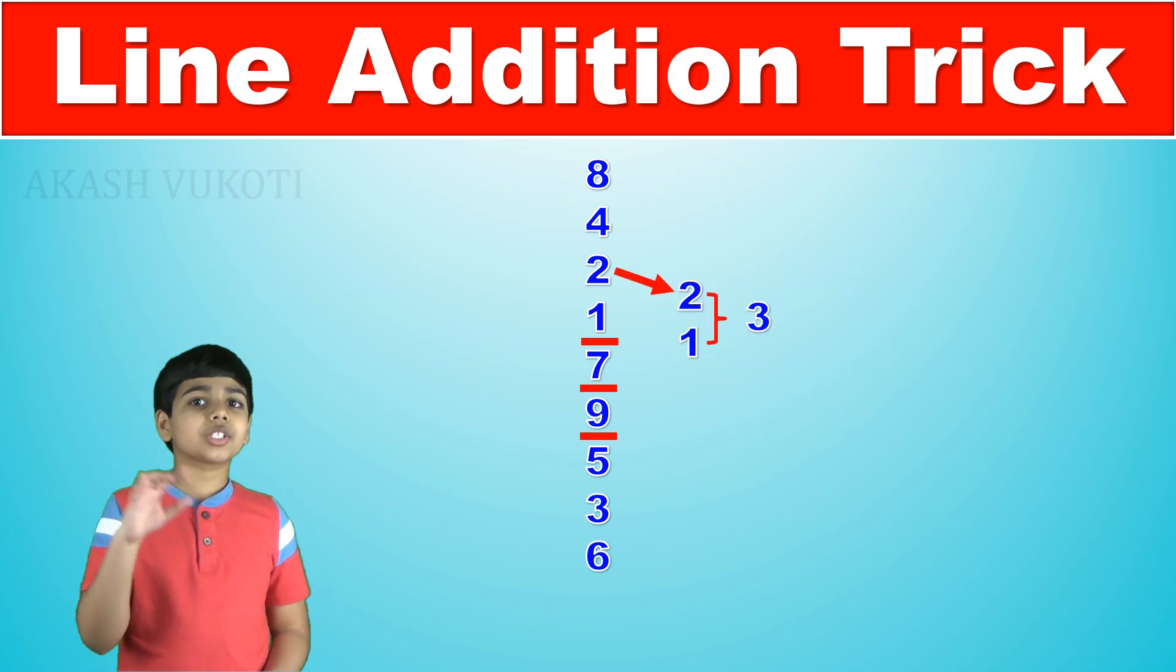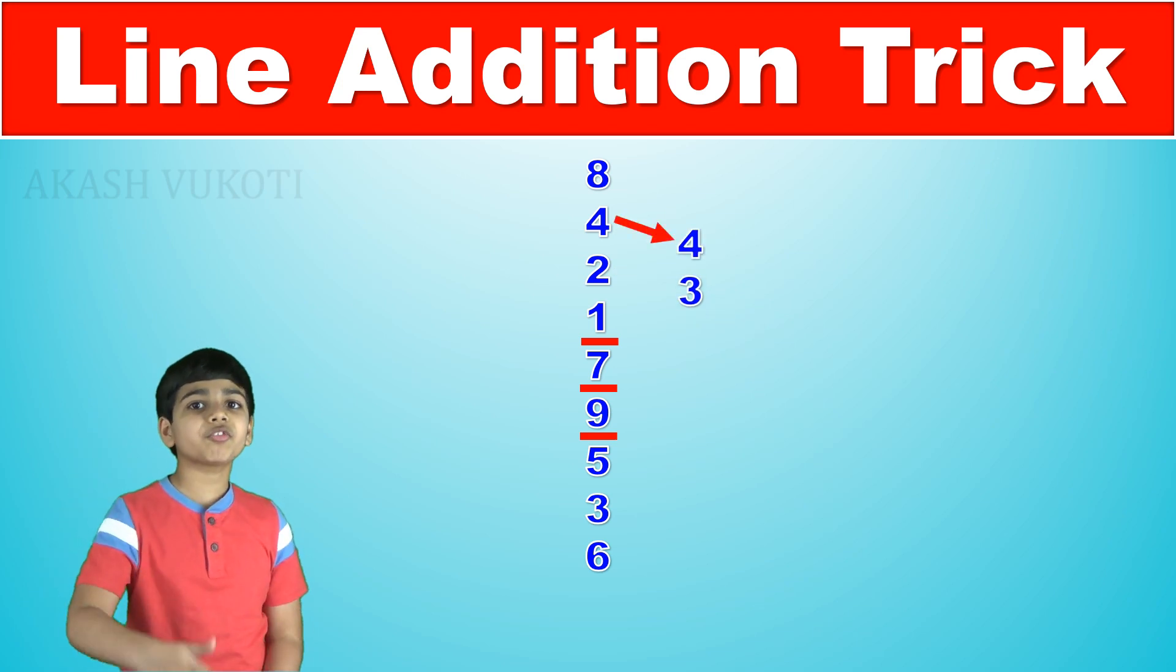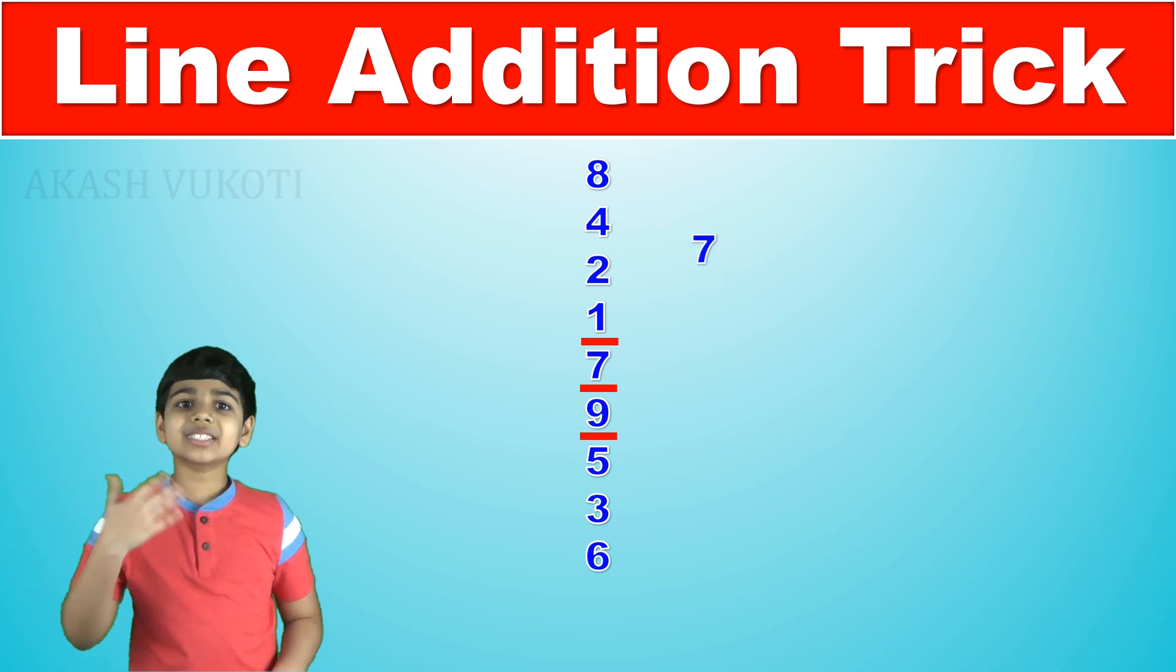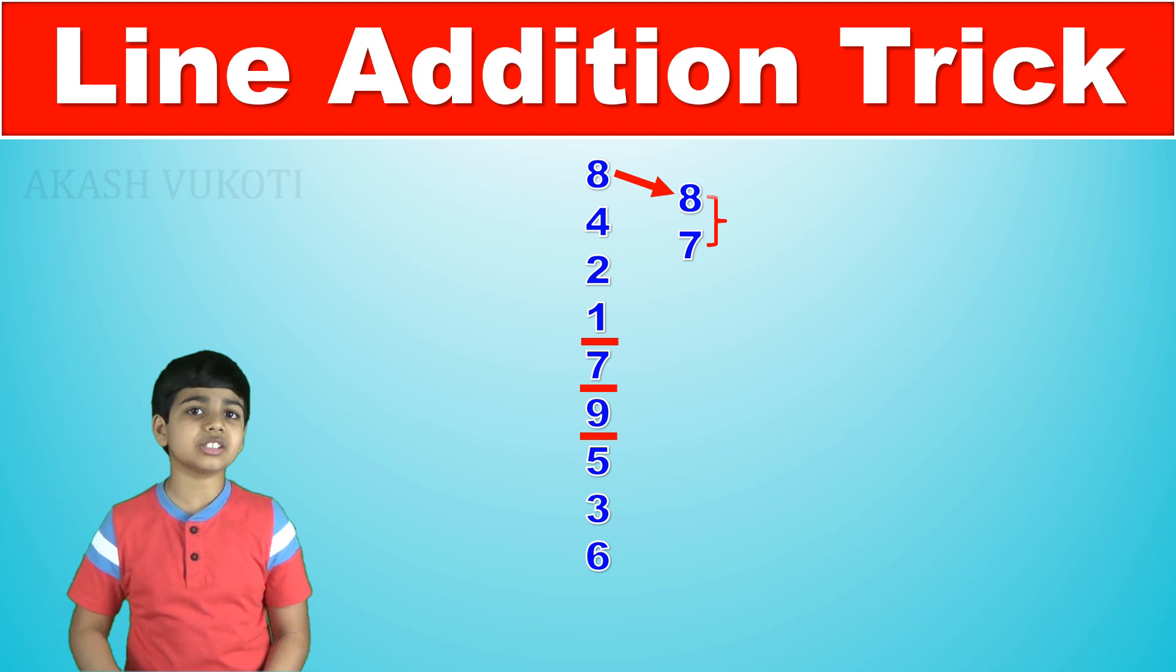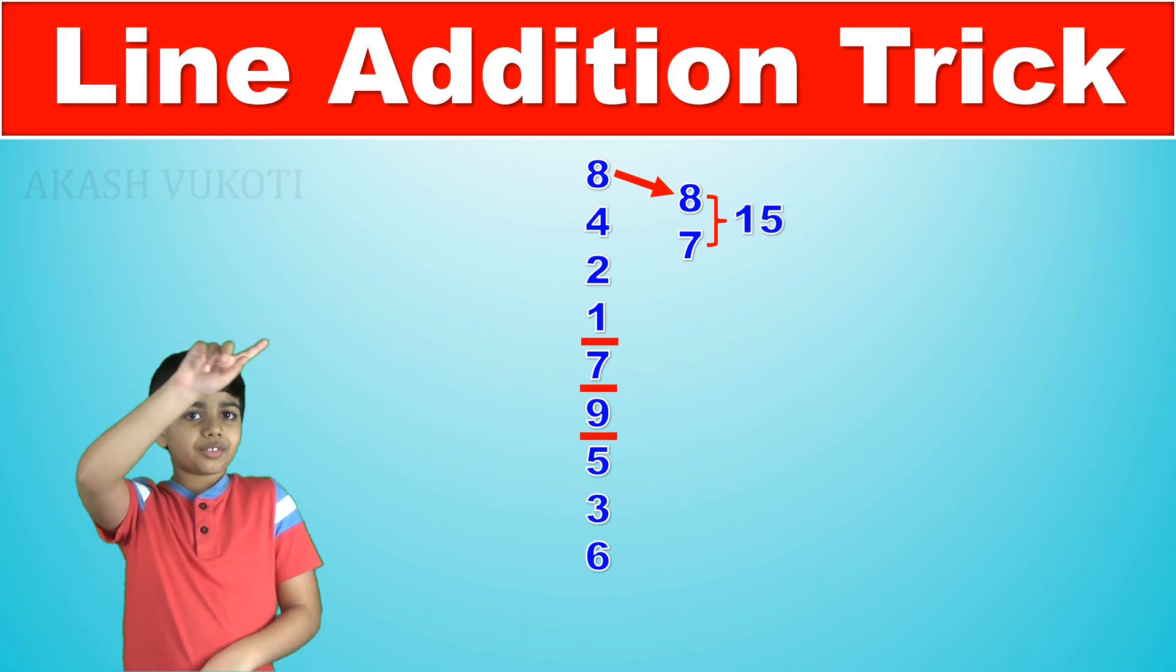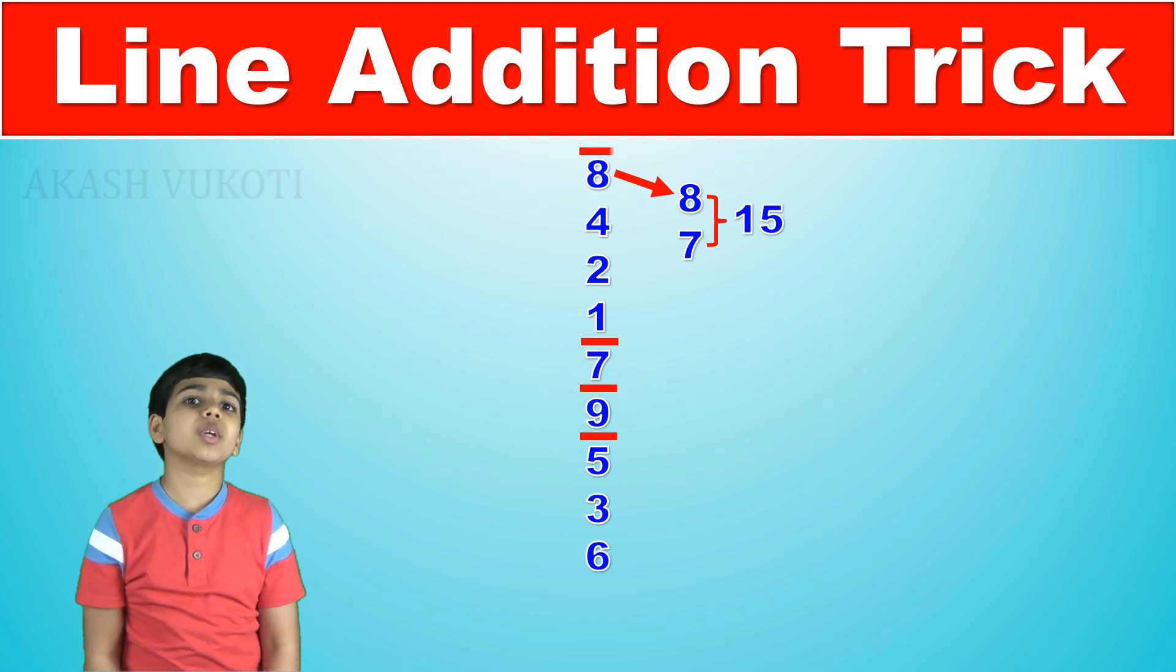So continuing on, 1 plus 2 is 3 plus 4 is 7 plus 8 is 15 so we will finally have to do one last line at the very top leaving us with 5.